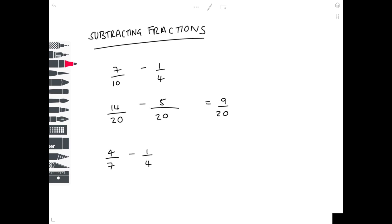Taking a second example: we're taking 1 quarter away from 4 sevenths. What number do both 7 and 4 go into? That is 28. What do we have to multiply 7 by to get to 28? That is 4, so 4 times 4 is 16. What number do we multiply 4 by to get to 28? That is 7, so 1 times 7 is 7. Now all you need to do is take 7 away from 16 to get 9 over 28, and that is your final answer.